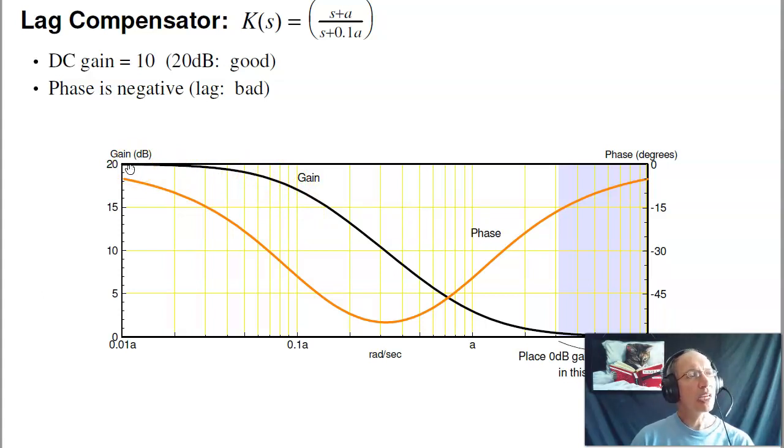The problem with the lag compensator is the phase shift is negative. That's phase lag, hence the name lag compensator. If I add a lag compensator, this negative phase shift is going to push you towards minus one and make the system go unstable. The added gain pushes you towards minus one and makes the system go unstable. So basically everything about the lag compensator is bad, except it does make the DC gain 10 times higher.